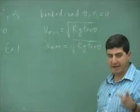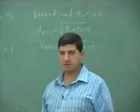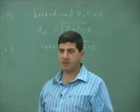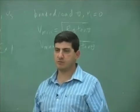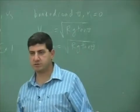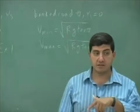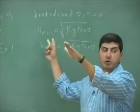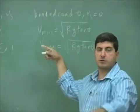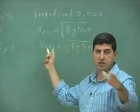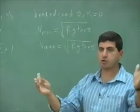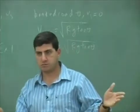What is that saying? If you go on a banked road with no friction, there's only one speed which you have to make the turn, right? If you go faster than this, you slide up the road. If you go slower than this, you slide down the road. So there's no cushion.